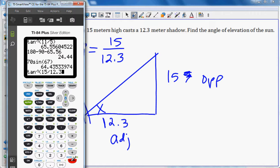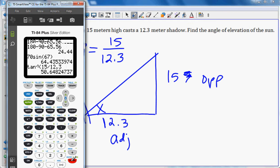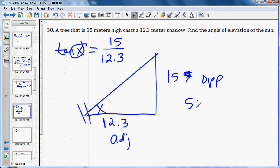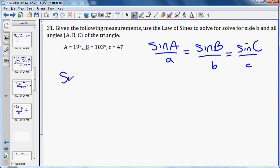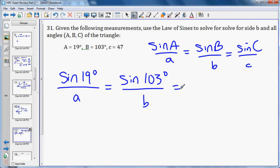Now we're dealing with the law of sines. Just a reminder, this is what the law of sines looks like. So we can fill in what we have here. Sine of 19 degrees over side A we don't know, equals sine of 103 degrees over side B we don't know, sine of angle C. We can figure out angle C because the three angles have to add up to 180. If we do 180 minus 19 minus 103, we get 58 degrees over side C, which we do know is 47.